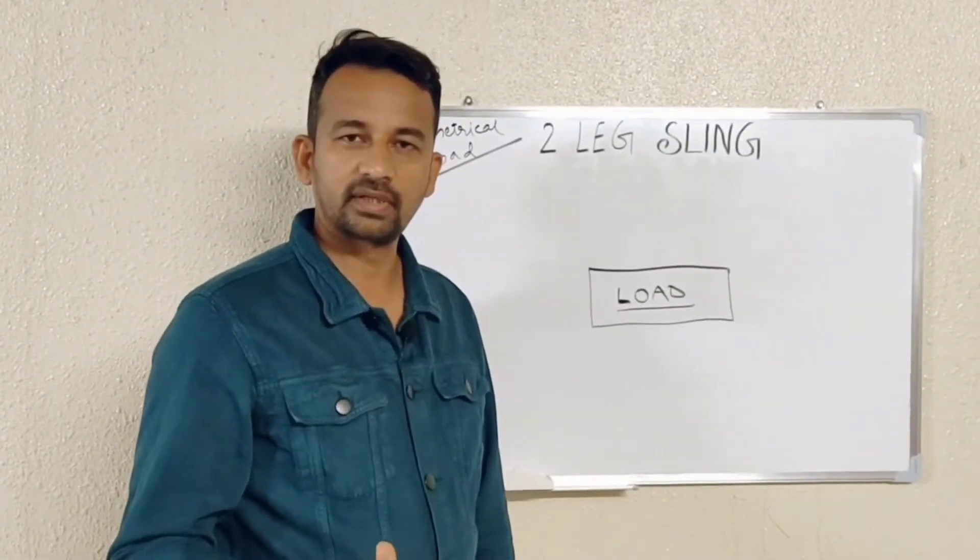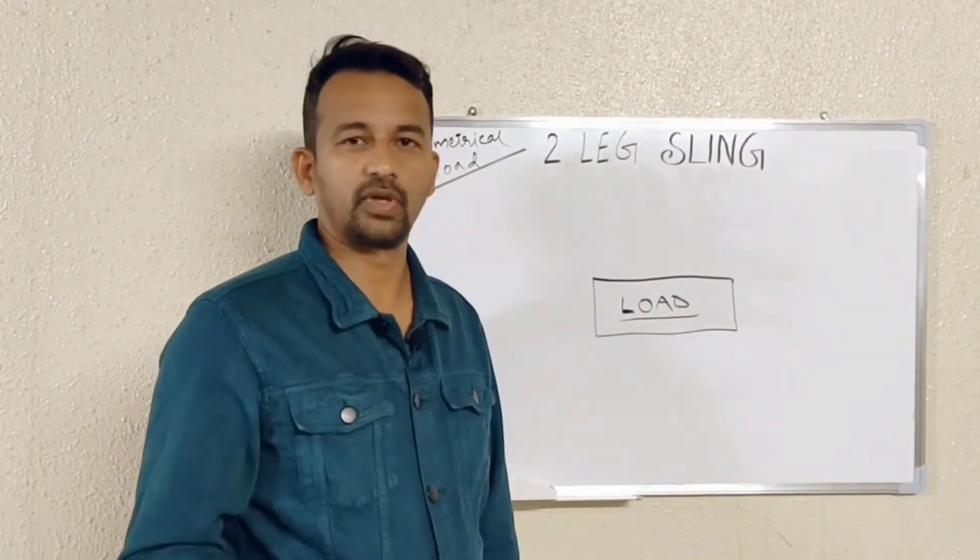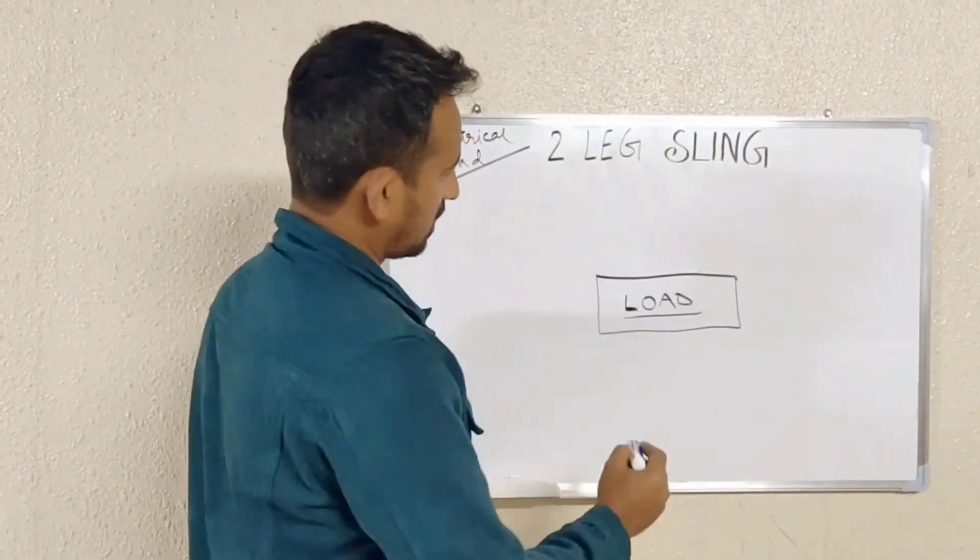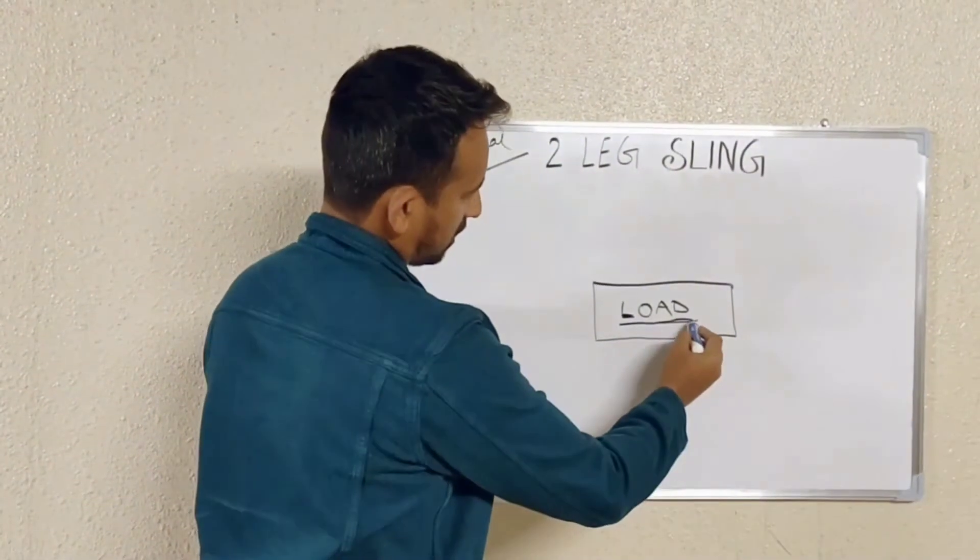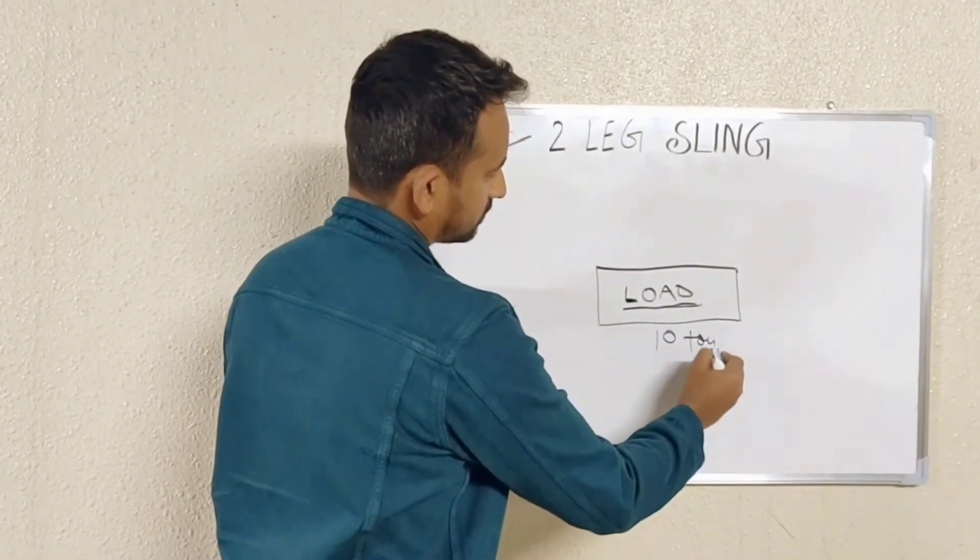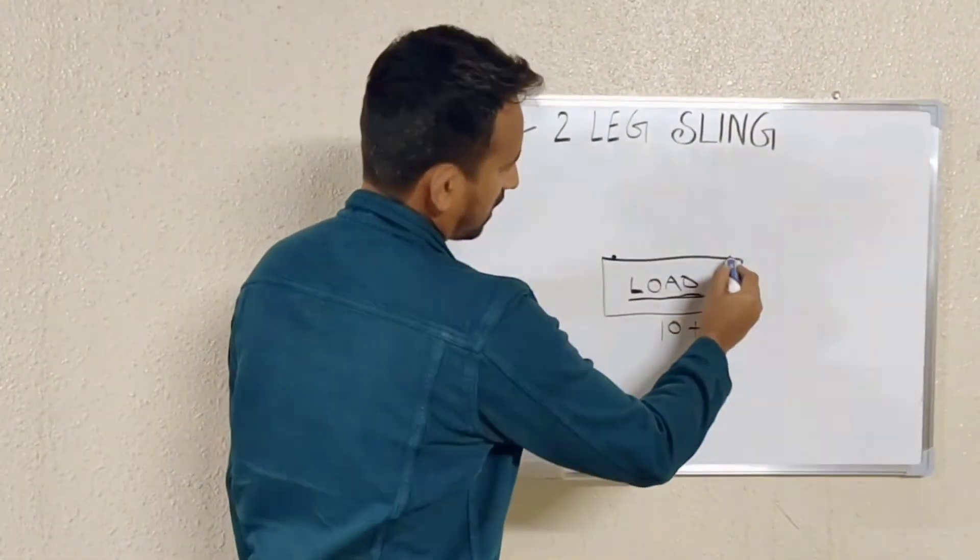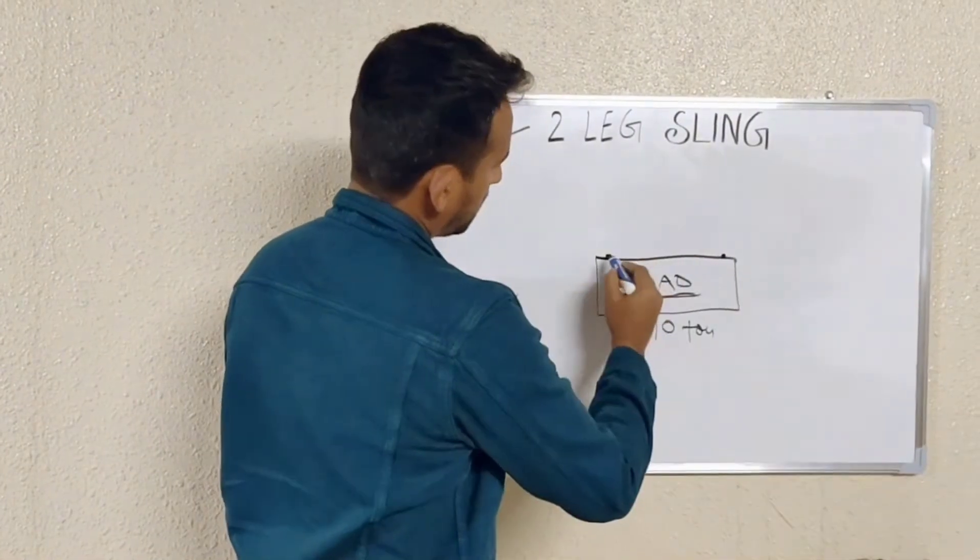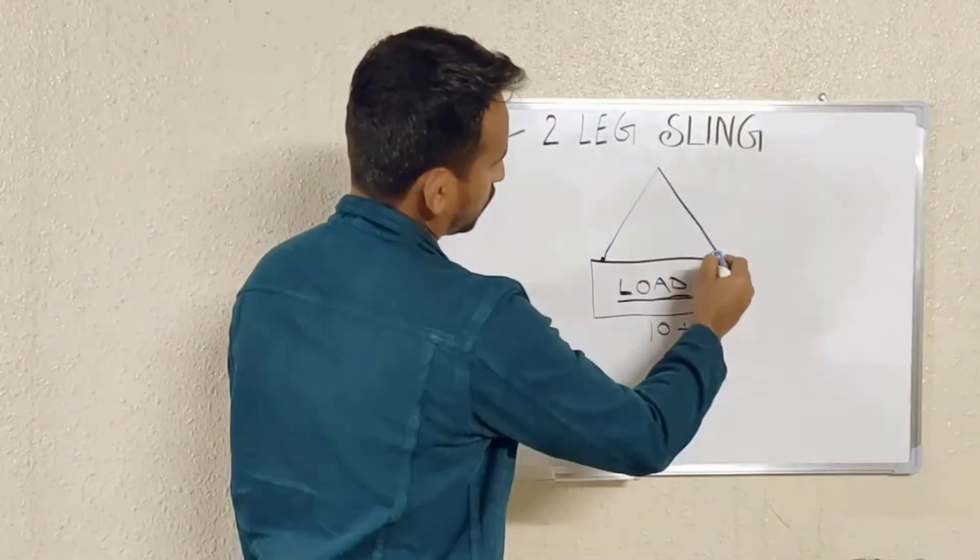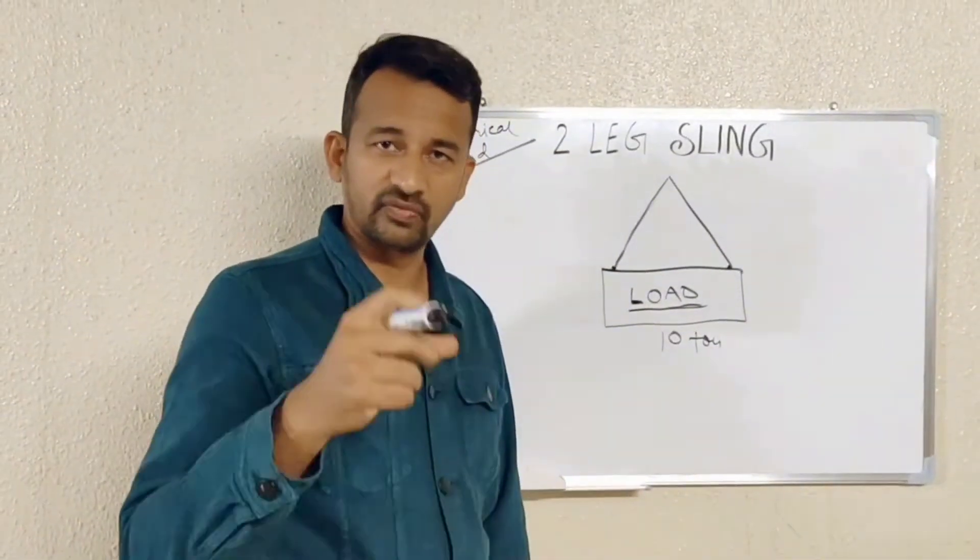How to calculate your sling capacity when you know the weight of the load. Here we have a load of, say, delta with two lifting points, one and two. It means we need two slings, or say two-leg sling, to lift the load.